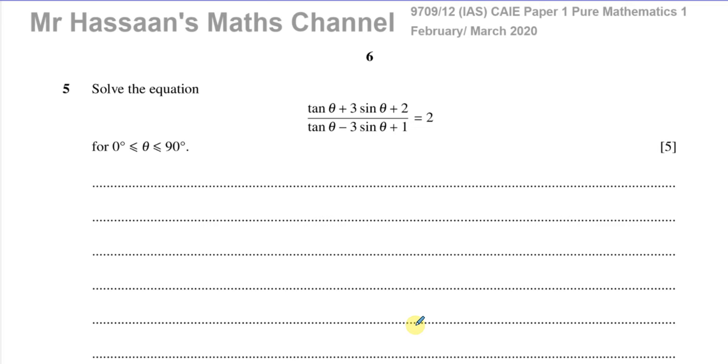This question here is about trig identities and equations. So we're given this trig equation that we have to solve and it looks a bit strange but of course it's going to be easy, don't worry. One of the ways to do that is to make everything into one trig ratio.